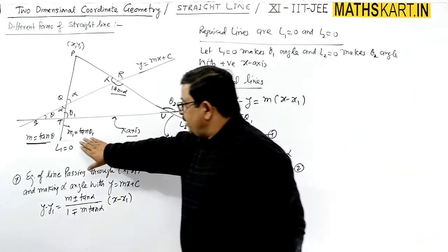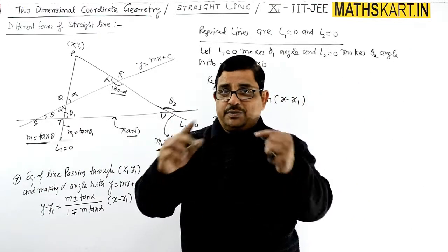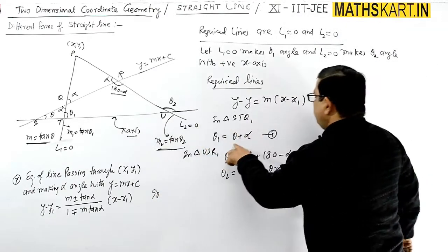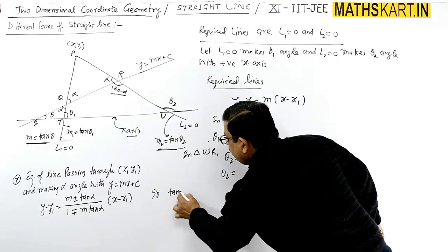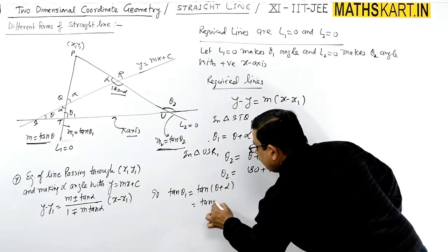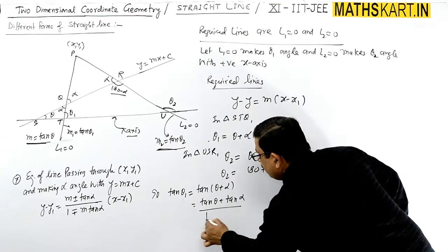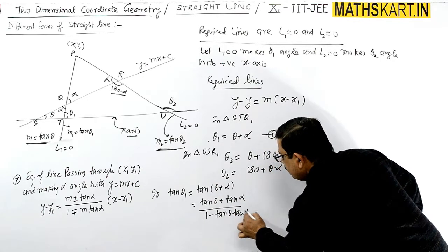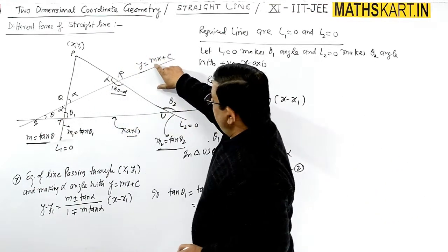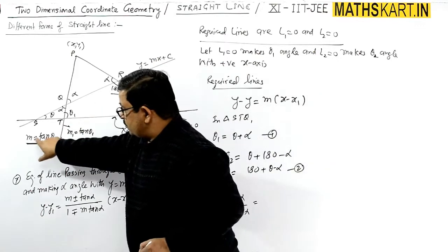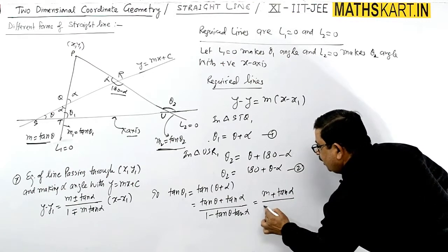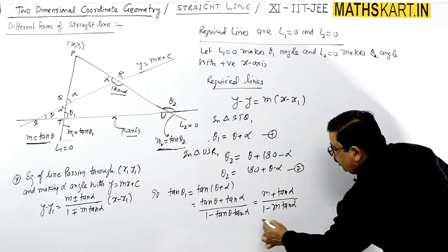Now we find slopes M1 and M2 by applying tangent. For M1: tan(theta1) = tan(theta + alpha) = (tan theta + tan alpha) / (1 − tan theta · tan alpha). Since the given line has slope m, tan theta = m, so M1 = (m + tan alpha) / (1 − m·tan alpha).